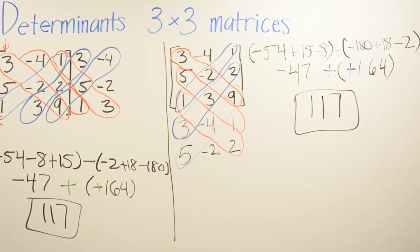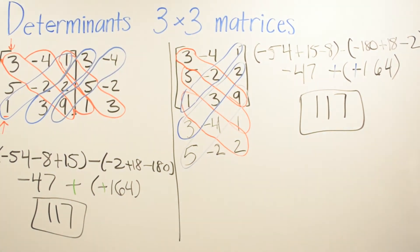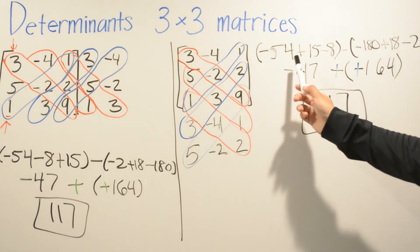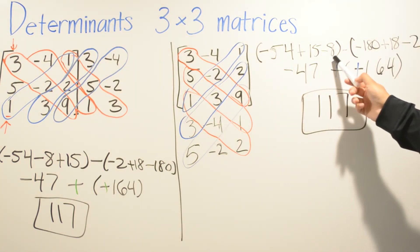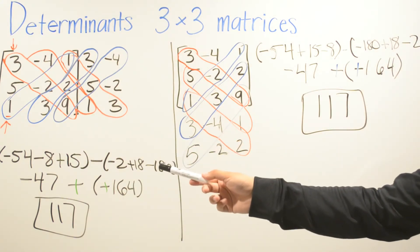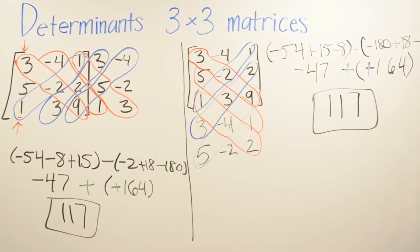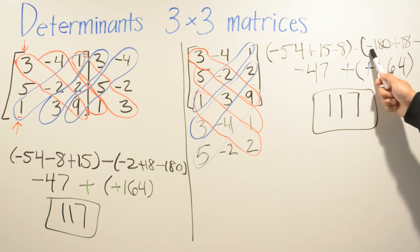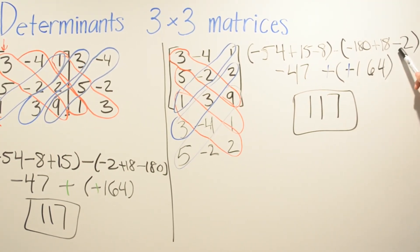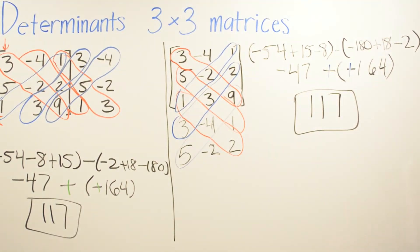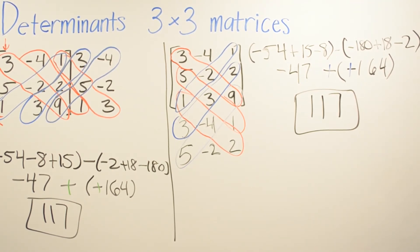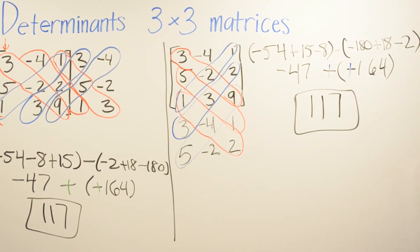As you can see, you get the same answer either way. The only difference is some numbers are moved around. Here you have negative 54 plus 15 minus 8; in the other problem you have negative 54, negative 8, plus 15. For the upward diagonals, you have negative 180 plus 18 minus 2 one way, and negative 2 plus 18 minus 180 the other way. It's the same answer — just two different approaches. Use whichever method is easiest for you. If you have problems, replay the video step by step so you can understand how to do the determinants of 3 by 3 matrices.